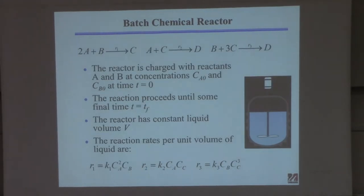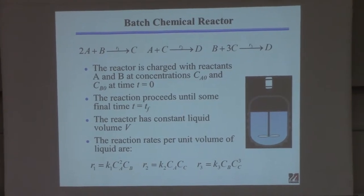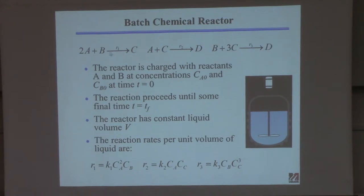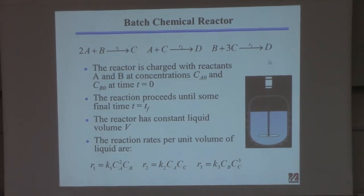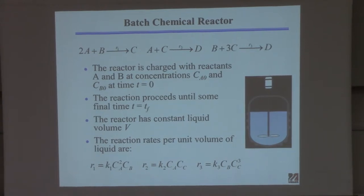Now I decide what balances to write. I always write an overall mass balance, though for this case it's trivial. I need balances on species A, B, and C — but not D. Because if you know A, B, and C in this constant-volume system, you can always recalculate D, since A plus B plus C plus D is all the mass. It would be redundant to write an equation on D.